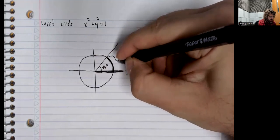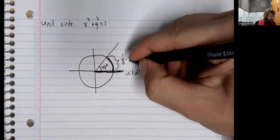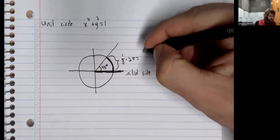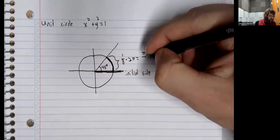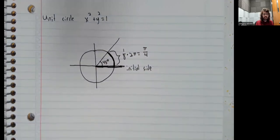So this distance is one eighth of two pi. So pi divided by four.